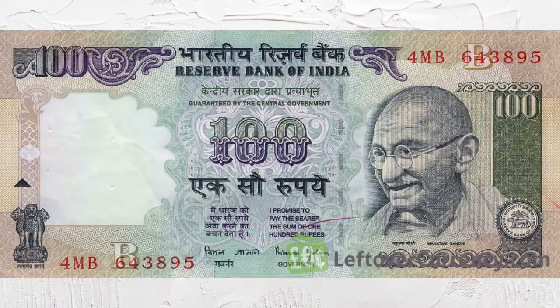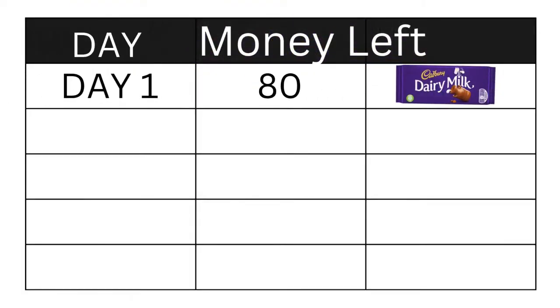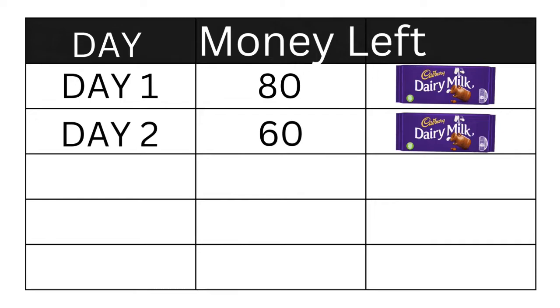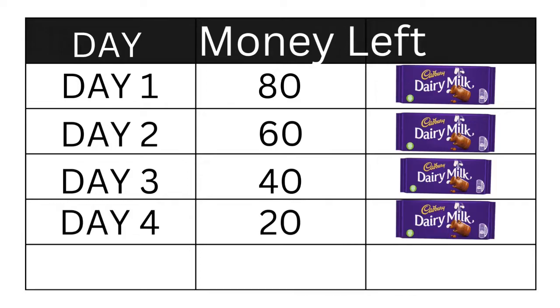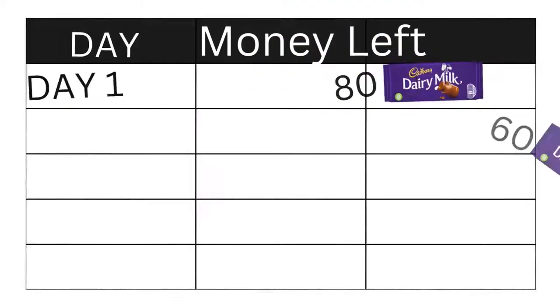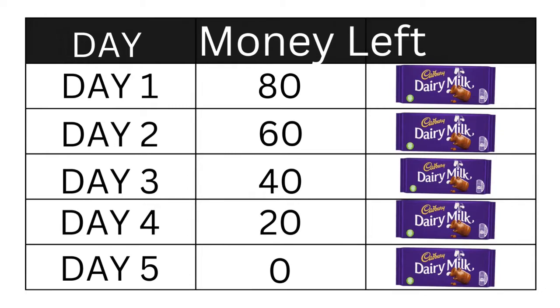Let me give you a situation. Assume you have 100 rupees and you want to eat your favorite chocolate. A piece of that chocolate costs 20 rupees. On day one you eat one chocolate, leaving 80 rupees. On day two another, leaving 60. Similarly, day three: 40, day four: 20, and on day five you eat your last chocolate. After day five you have no money left.